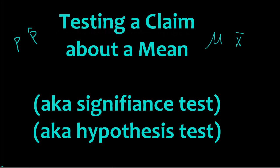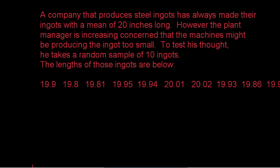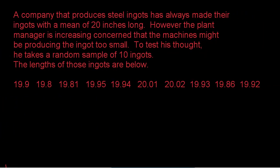So again, we're testing a claim about a mean. Really what this is all about is that somebody makes a claim about a population mean, and we want to see if that claim is true or if we just don't have enough evidence to say it's true. And the only way to do that is to take a sample. So let's look at an example that we'll use throughout this video to help you understand the entire process.